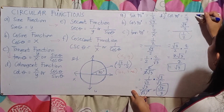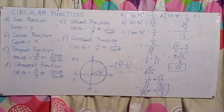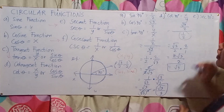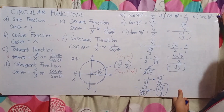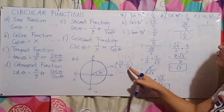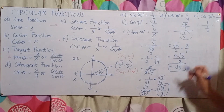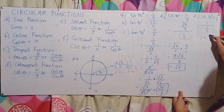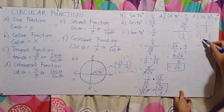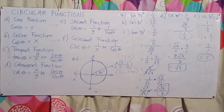Letter E is secant. Sec 30 degrees — the formula is 1 over y, but here we use 1 over cos theta, so 1 divided by 1/2. Take the reciprocal of 1/2 to get 2/1, so 1 times 2 over 1 equals 2. Therefore, secant 30 degrees equals 2.